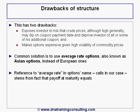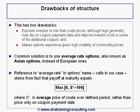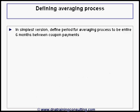The reference to average rate in the name of these options — specifically calls in our case — stems from the fact that their payoff at maturity equals max(0, S* minus 100), where S* is the average price of crude over some defined period of time, rather than the price on only the coupon payment date. In the simplest version, we would define the period for the averaging process to be the entire six months between coupon payments.